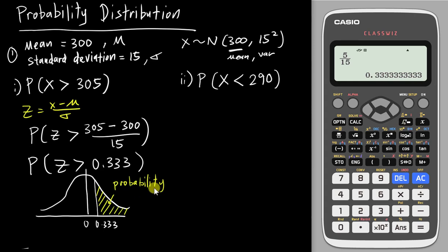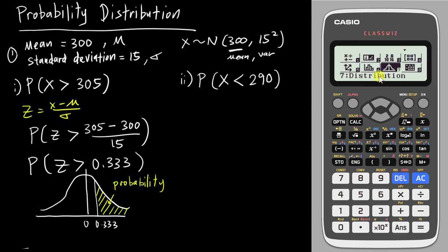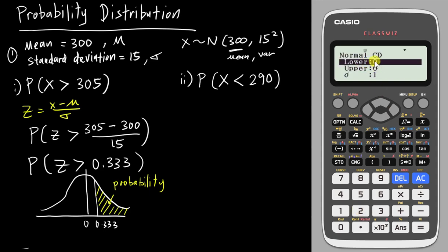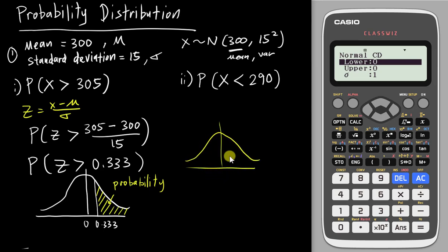However, with the Casio 570 EX calculator, you can get the answer easily. Go into the menu, look for distribution which is option 7, then look for Normal CD — the CD stands for cumulative density — which is number 2. This is what you use in this topic to find the area. It will ask you for a lower bound and upper bound.